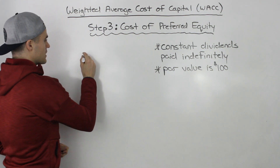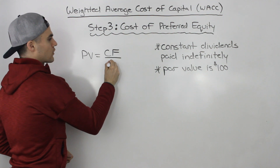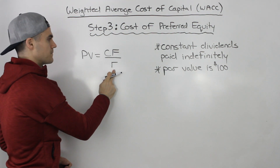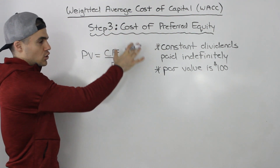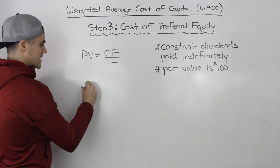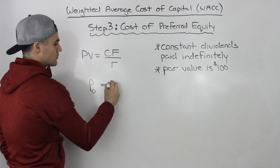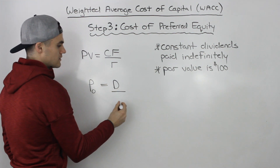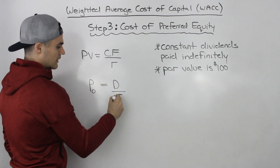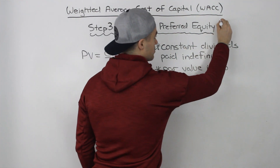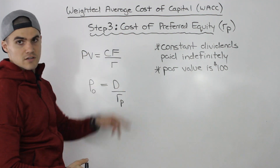So if dividends are being paid forever, that means it's just going to be a regular perpetuity. The present value of a perpetuity is just equal to the cash flow over the return or the discount rate. In terms of preferred equity, the price of preferred equity stock P0 is equal to the dividend being paid over the return on preferred, or cost of preferred equity, which we label as RP.